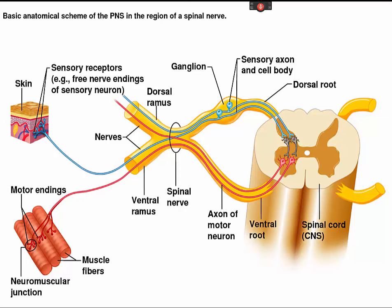The sensory posterior nerve root enters the back of the spinal cord. Sensory nerve fibers carry information about body position, light touch, temperature, and pain to the brain from other parts of the body. The sensory nerve fibers from a specific sensory nerve root carry information from a specific area of the body called a dermatome.